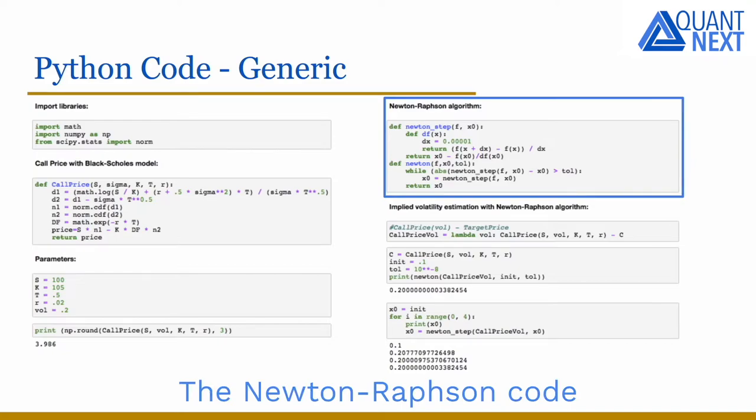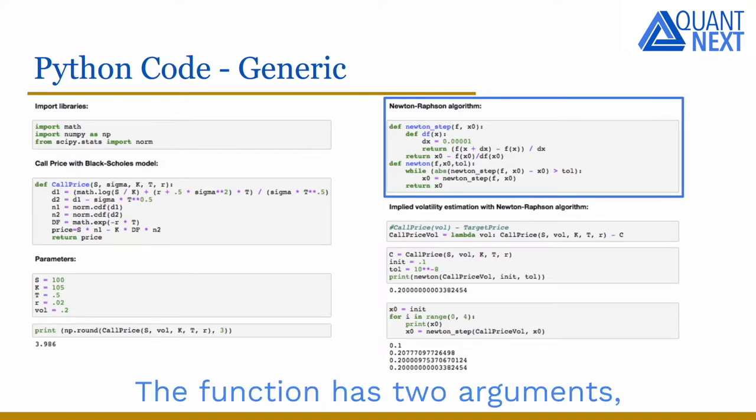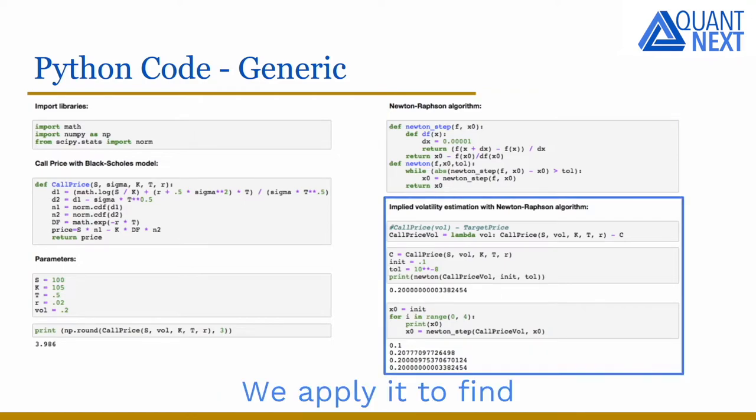The Newton-Raphson code for finding the root of a function is quite generic. The function has two arguments: the function f and the initial guess x0. And we approximate the derivative with finite difference.